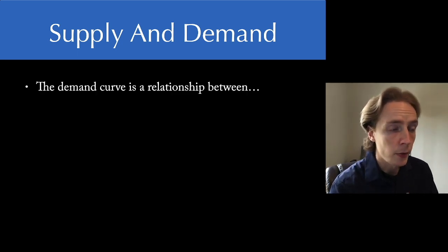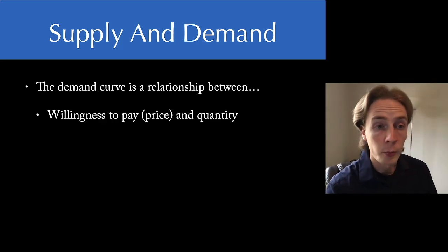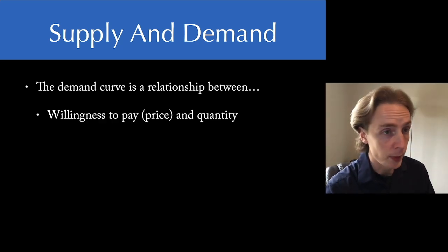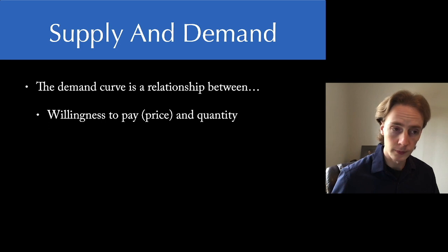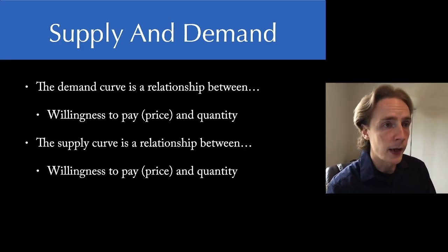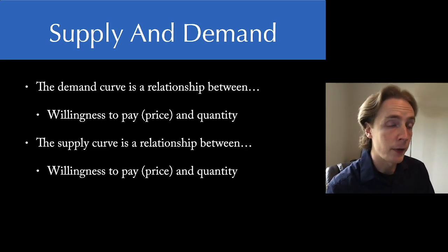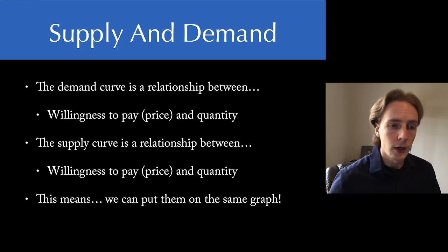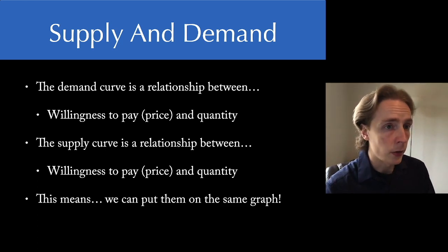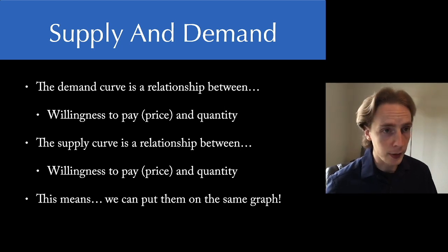We can do that because the demand curve is a relationship between two things: the price of something, or the willingness to pay for something, and the quantity of that something that you will want to purchase. The supply curve, similarly, is a relationship between the willingness to pay for something that you might be willing to provide and the quantity that you would be willing to provide. Because these two curves are relationships between the same two things, we can put them on the same graph together.